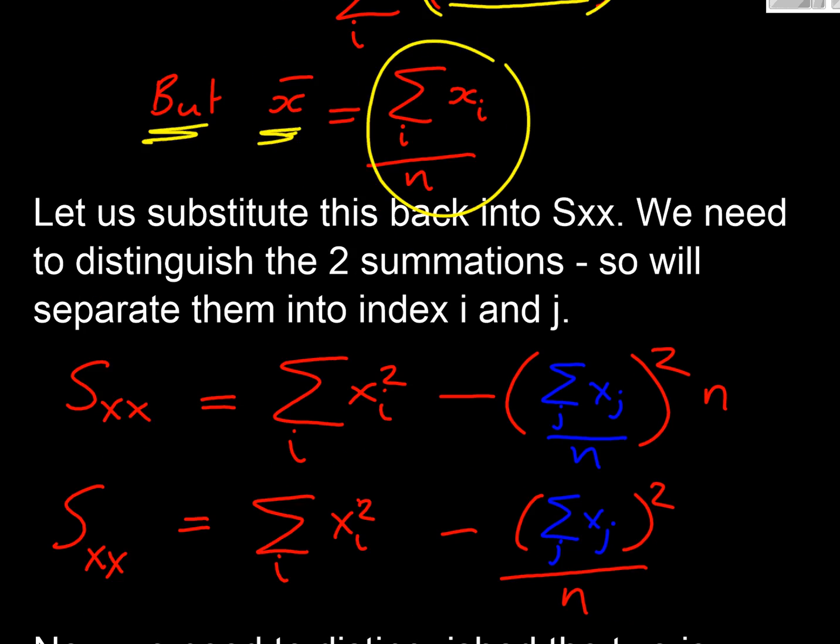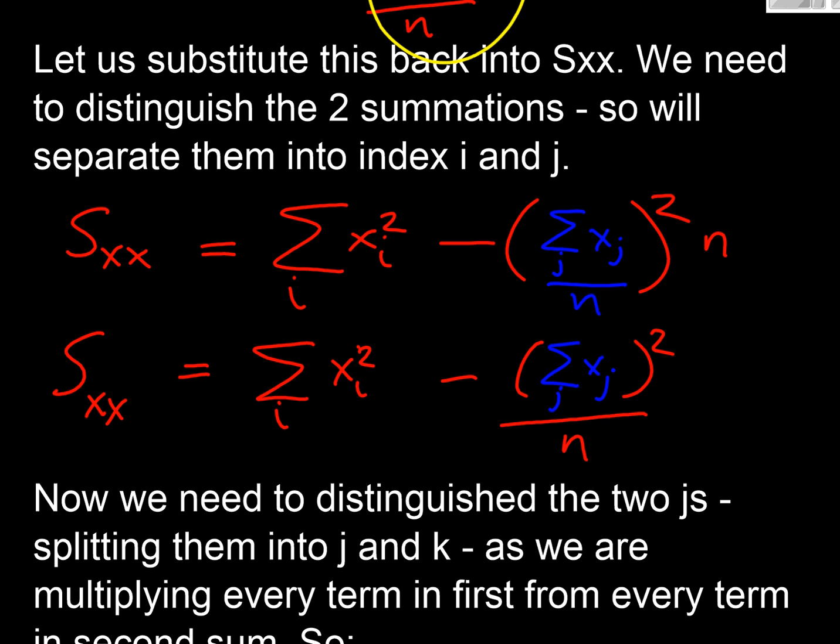So if we substitute that back into our equation here, that's our x bar here and then we bring the n outside of the bracket. We've got n squared on the bottom, by n cancelling out we end up with this form of the equation.